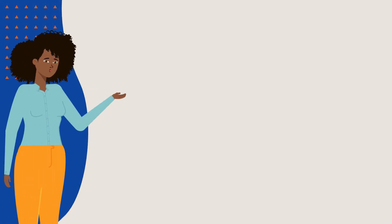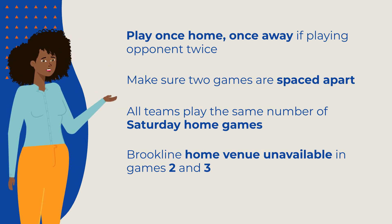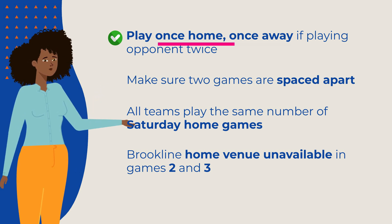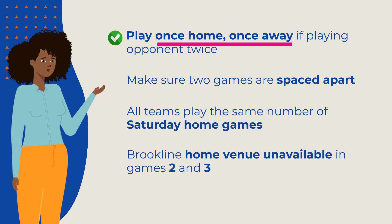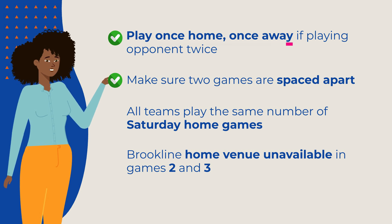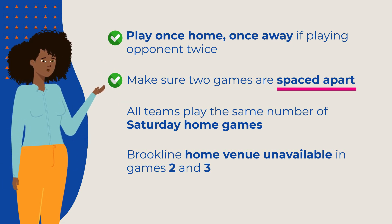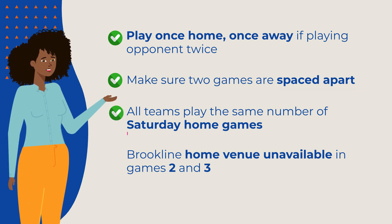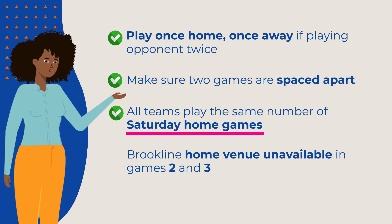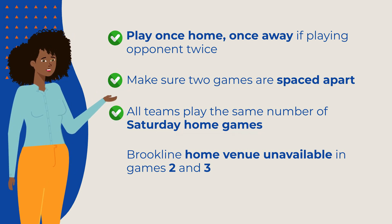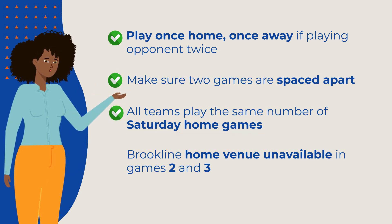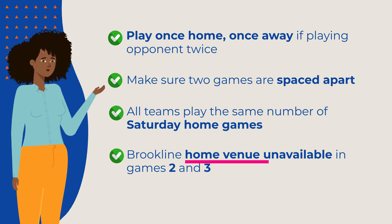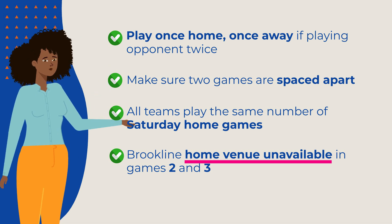Let's also assume that we want to apply some other common scheduling rules. For example, if teams play twice, they must play once home and once away. If teams play twice, we want to make sure those two games are spaced apart throughout the season. Let's also pretend that all teams prefer Saturday home games instead of Thursday, so make sure each team receives a similar number of home Saturday games. Brookline must play away games in the second and third game dates due to venue availability issues.